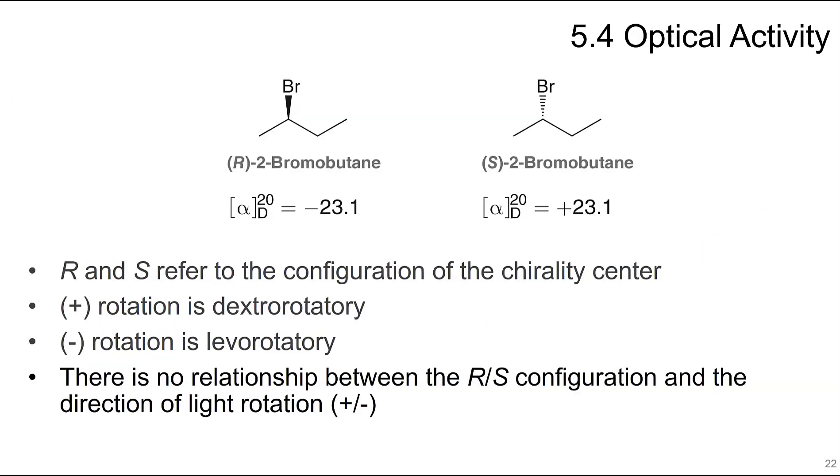For R-2-bromobutane, it has the minus here, which means that it rotates the light to the levorotatory direction or left, and then positive is for the dextrorotatory. R and S refer to the configuration of the chirality center, and the plus and minus refer to which way the light is rotated. This number here is the degrees to which it is rotated, 23.1 degrees. There's no relationship between R and S and the direction of light rotation. Just because this is R minus doesn't mean that all R is minus.